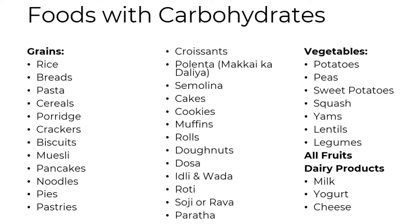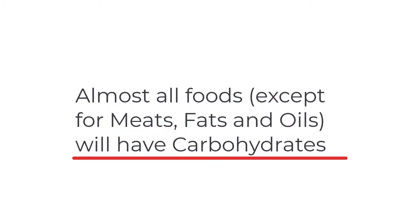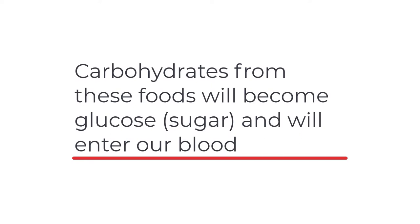Vegetables such as potatoes, peas, sweet potatoes, squash, yams, lentils, and legumes all naturally have carbohydrates in them as well. All the fruits you know of have sugars and carbohydrates, and dairy products like milk, yogurt and cheese too. So pretty much everything except for meats has carbohydrates. Can you imagine how much sugar we are pushing into our blood by eating so many different varieties of carbohydrates?